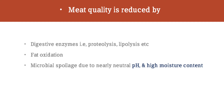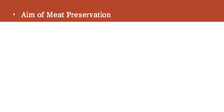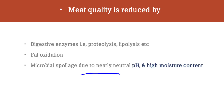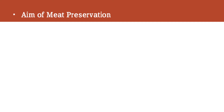Meat quality is reduced over time through digestive enzymes which cause proteolysis, lipolysis, fat oxidation, and microbial spoilage due to the neutral pH and high moisture content of the meat. Microbial growth occurs mainly at neutral pH and high moisture contents, which facilitates microbes to grow, causing spoilage and degeneration of the muscle tissues and affecting the tenderness of the meat.